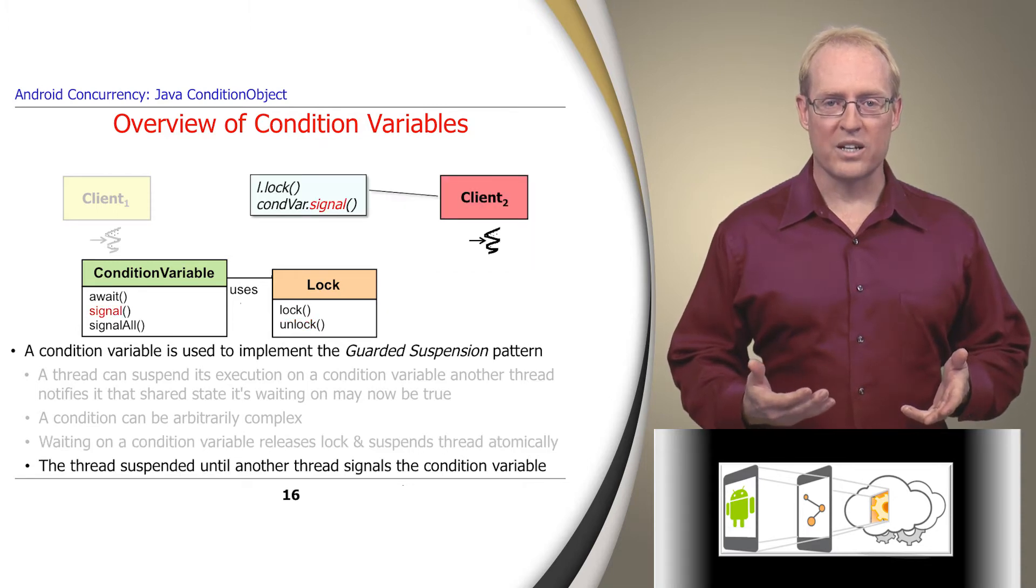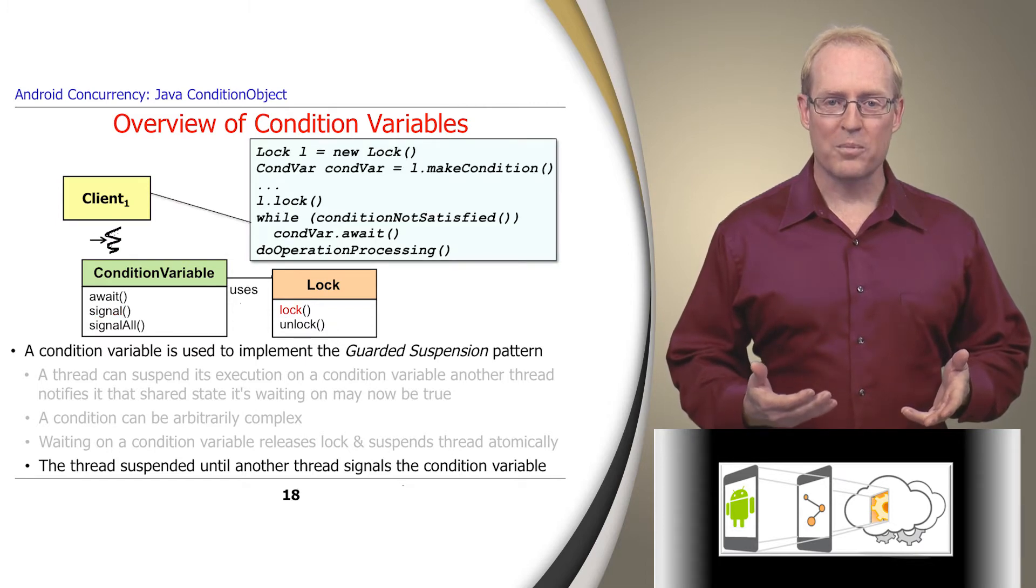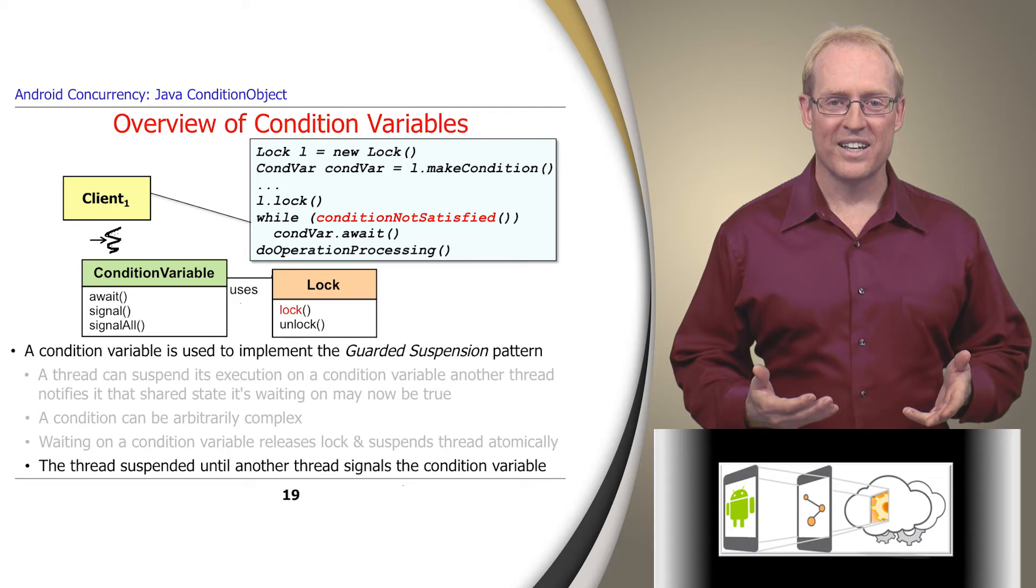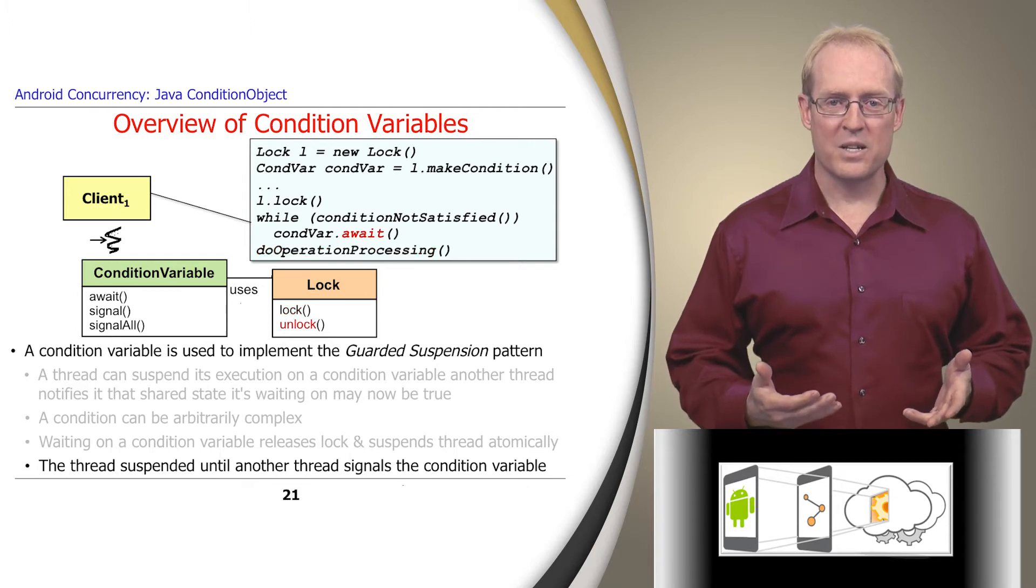When another thread signals the condition variable and the thread scheduler wakes up the waiting thread, the lock is reacquired implicitly, and the code running in the reawakened thread checks to see if the shared state has satisfied its designated condition. If the condition is satisfied, its processing can continue. If not, it suspends itself by waiting on the condition variable again and releases the lock atomically.